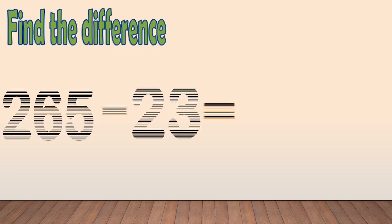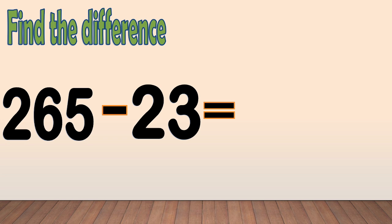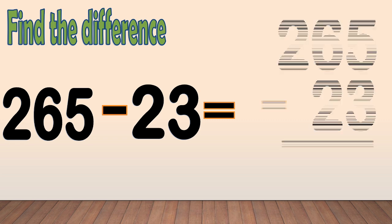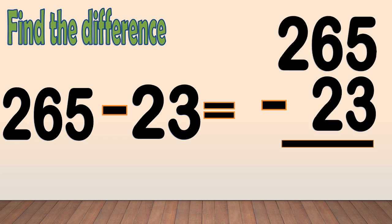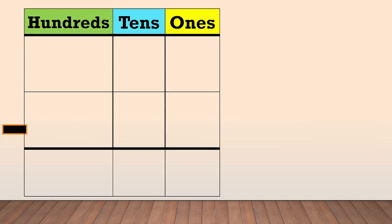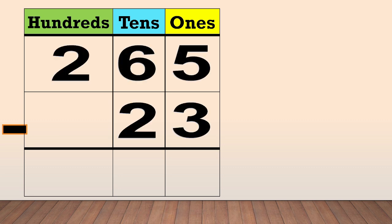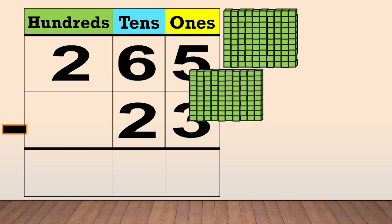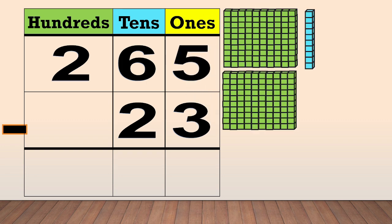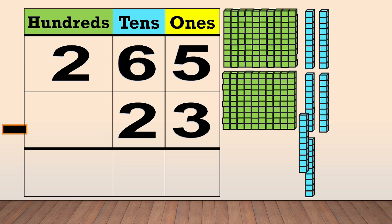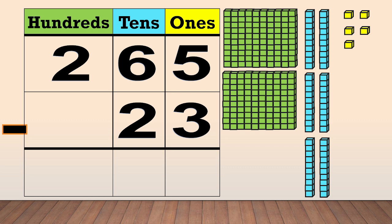Find the difference. 265 minus 23. First, arrange the numbers in columns. Place the digit of each number in a column based on its place value. 265 has two hundreds, six tens, and five ones.